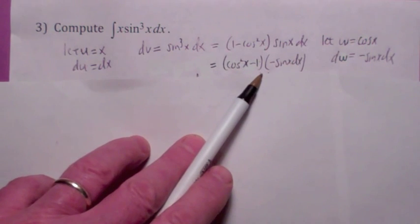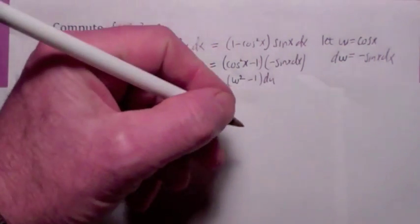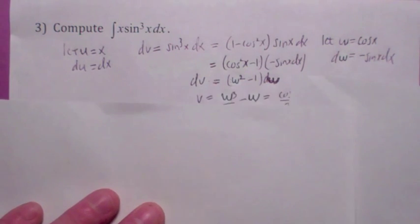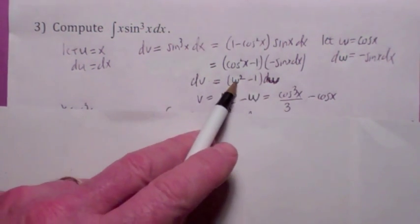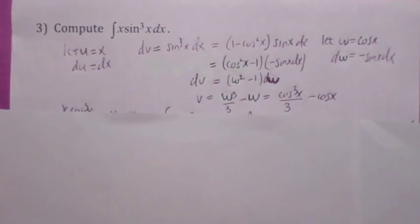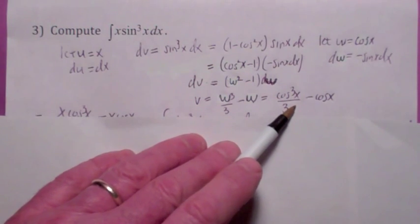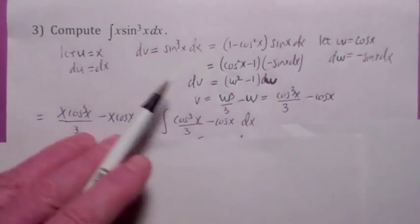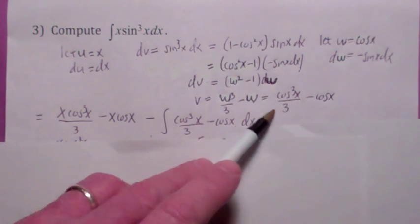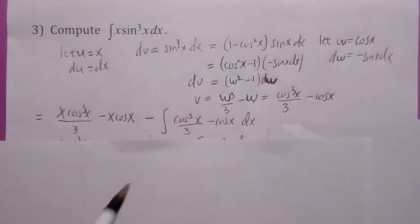To handle the negative on sine x, flip the order: cosine squared x minus 1. So dv becomes w squared minus 1 dw after substitution. Then v equals w cubed over 3 minus w, or written back in terms of x: cosine cubed x over 3 minus cosine x. Applying integration by parts—uv minus the integral of v du—gives you x times that quantity: x cosine cubed x over 3 minus x cosine x, minus the integral of v du. Integrating the cosine term gives you plus sine x.